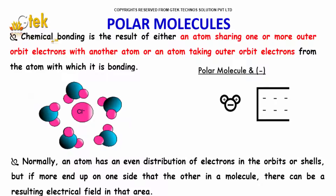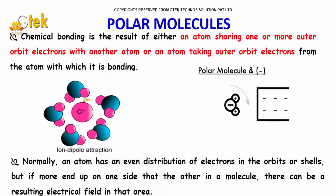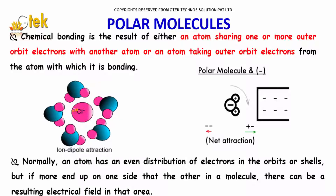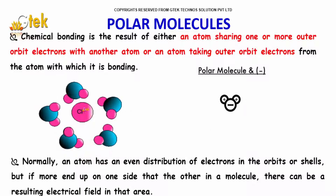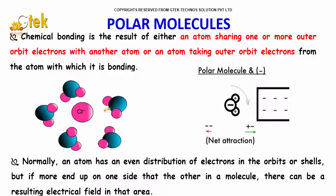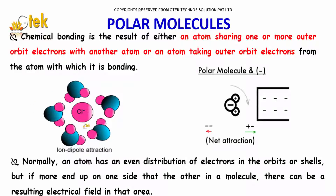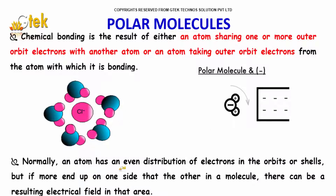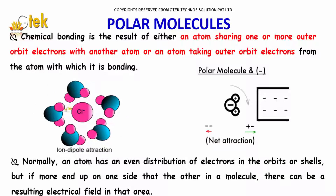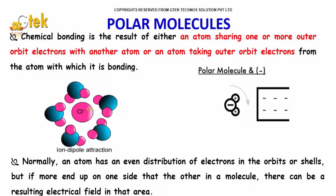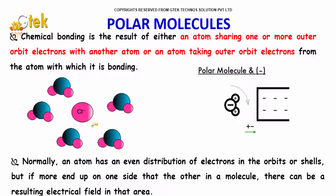Chemical bonding is the result of either an atom sharing one or more outer-orbit electrons with another atom, or an atom taking outer-orbit electrons from the atom with which it is bonding. Normally, an atom has an even distribution of electrons in the orbital shells, but if more end up on one side than the other in a molecule, there can be a resulting electrical field in that area.